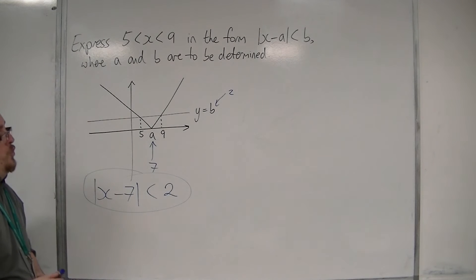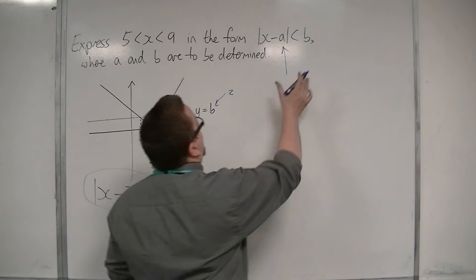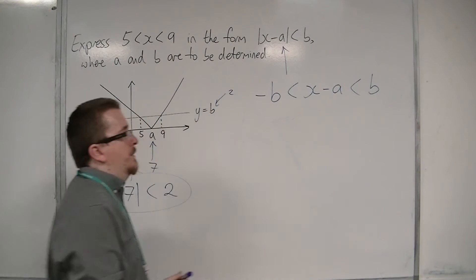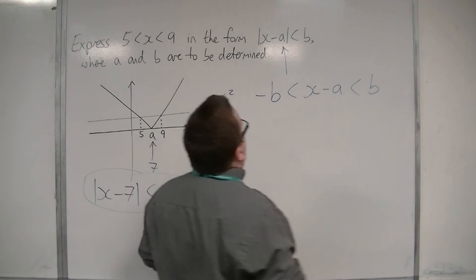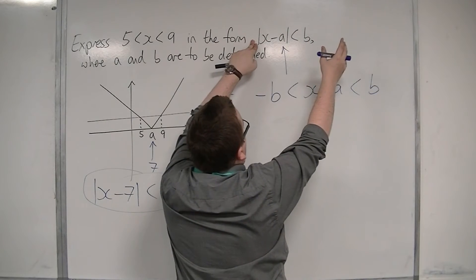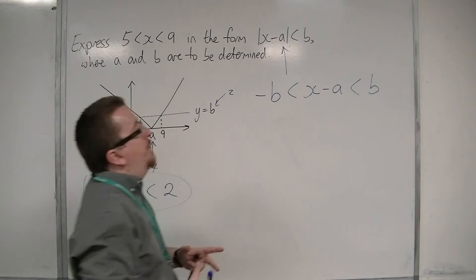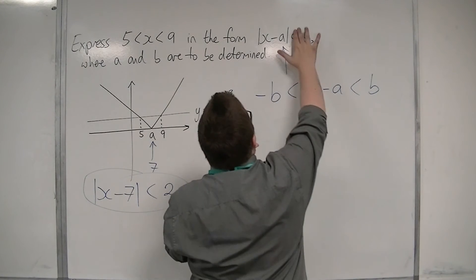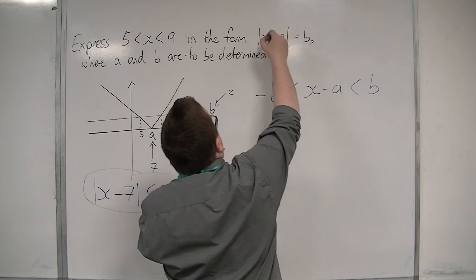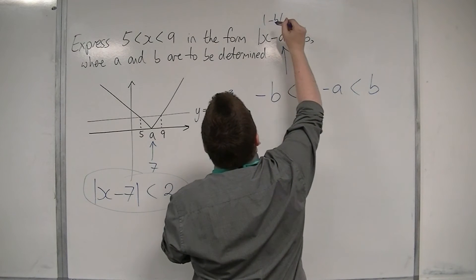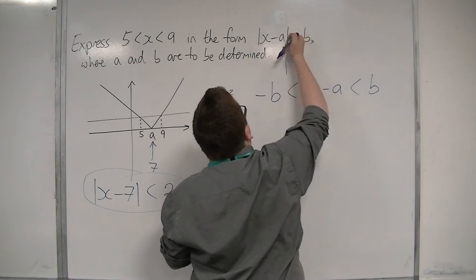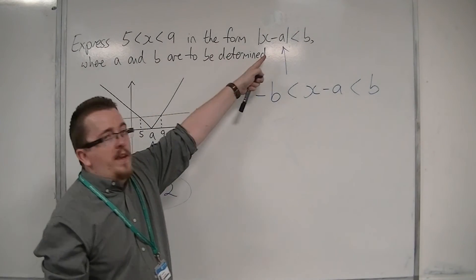That's the graphical approach. Some of you might prefer an algebraic way. What we want to notice is that |x - a| < b can be written in the format -b < x - a < b. The reason why that is: if |x - a| < b, then whatever value goes in here must be positive. So if x - a equals -b, then the modulus of -b is just b, and so it takes care of the negative side as well.